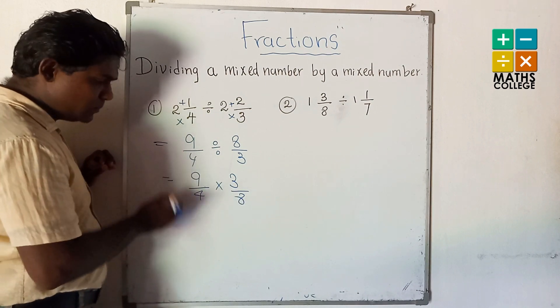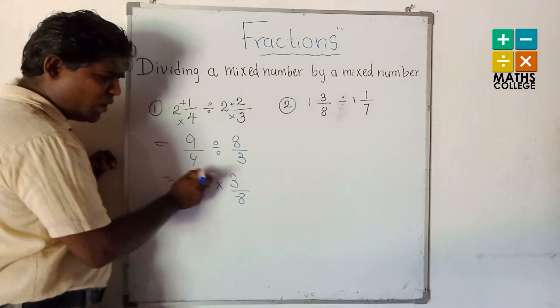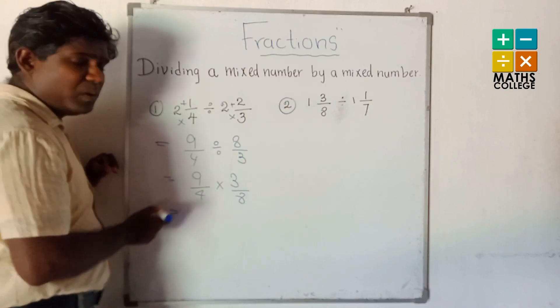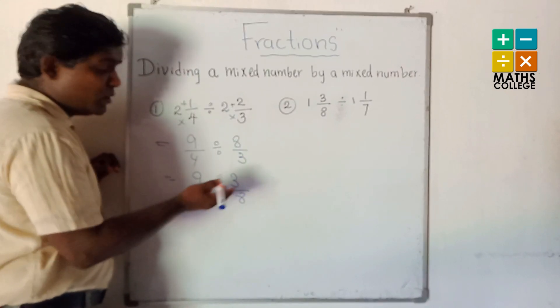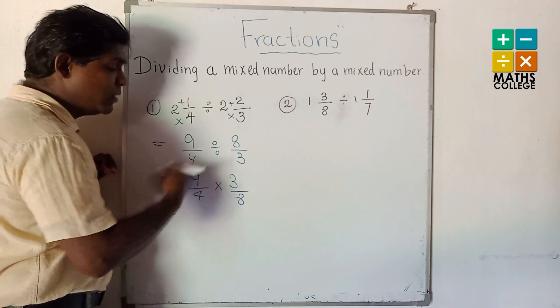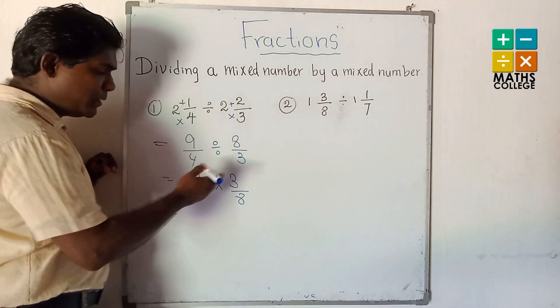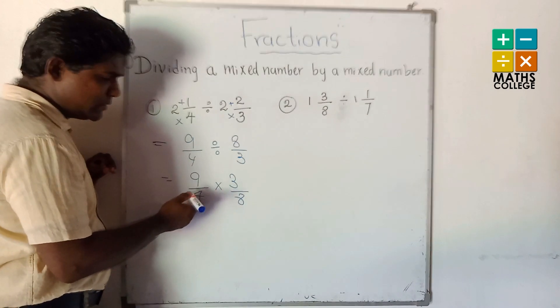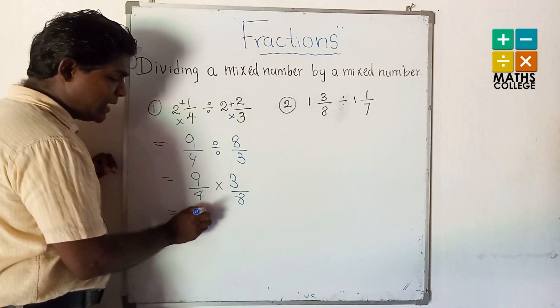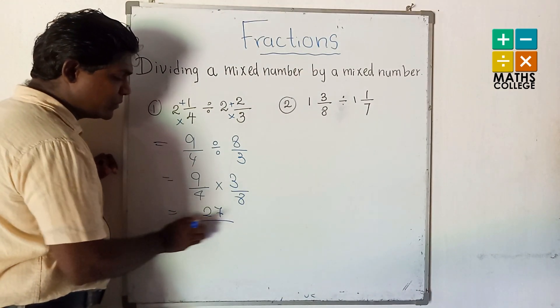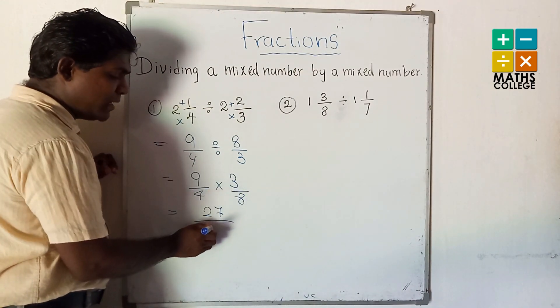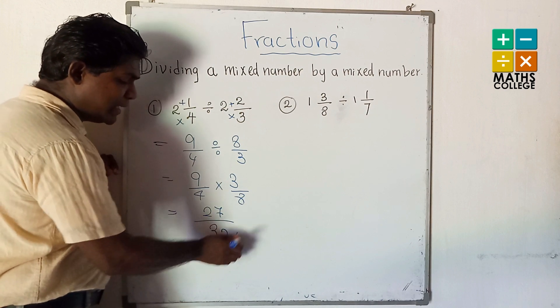Now you can consider 9 and 4, or 9 and 8, no common factor. With 3 also no common factor. We can write the multiply answer: 9 multiply 3 is 27, 4 multiply 8 is 32. This is the answer: 27/32.